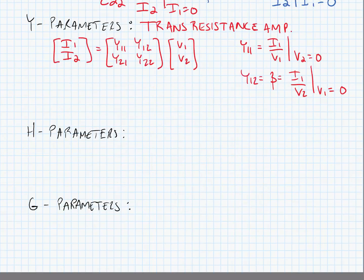What we notice about both Y-parameters and Z-parameters is that all of the parameters have the same form. For Z-parameters, all of the parameters — Z11, Z12, Z21, and Z22 — are impedances; in other words, they're ratios of voltage over current. Y-parameters are all ratios of current over voltage.